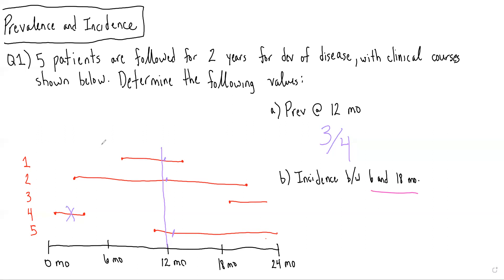So if we look at six months, patient four has already passed away, and patient two already has the disease. And therefore, there are only three patients at risk: patient one, patient three, and patient five.